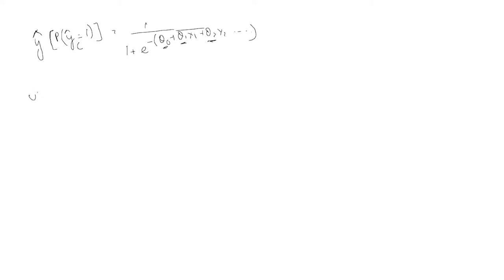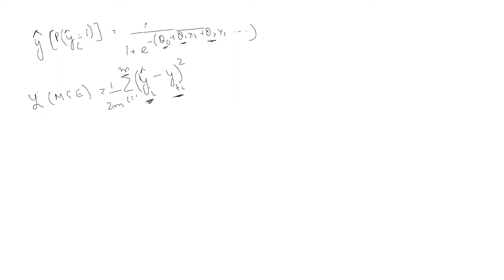For linear regression, to learn the parameters θ₀ and θ₁, we used a loss function called the MSE (Mean Squared Error) loss. The MSE loss is given by the sum of (y_predicted minus y_actual) squared, summed over all examples i from 1 to m, divided by m.